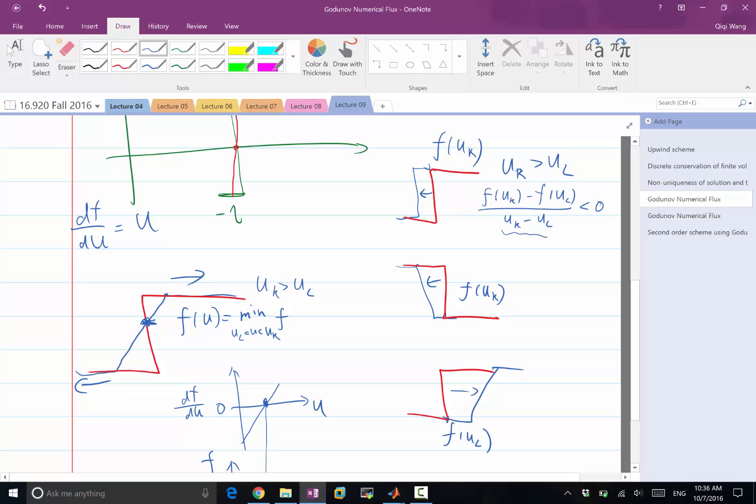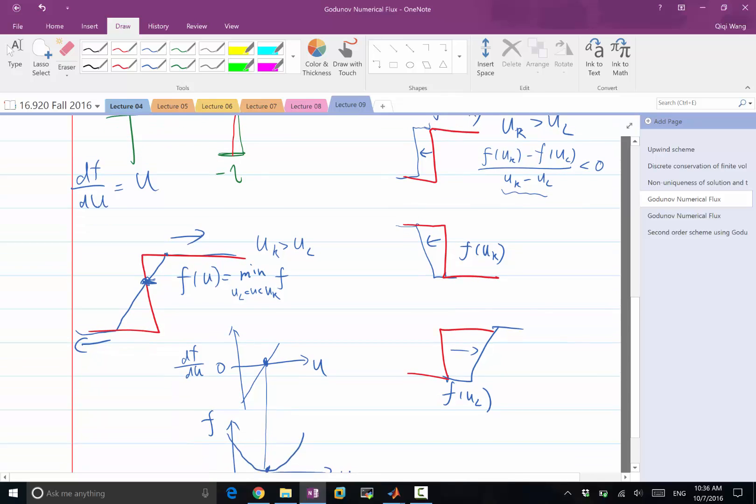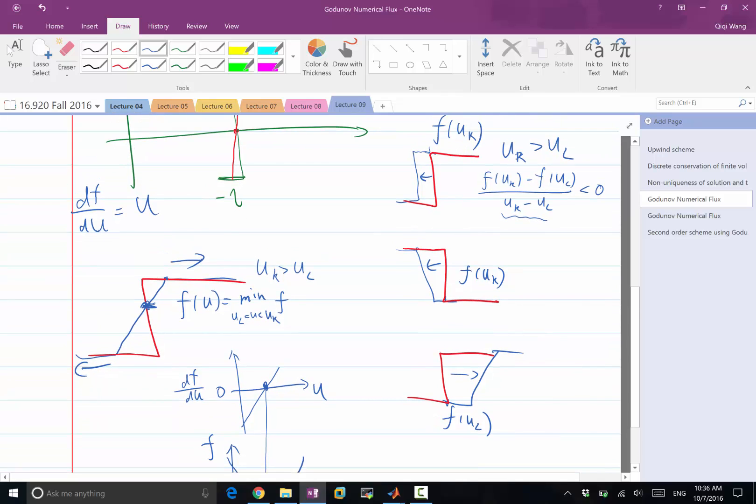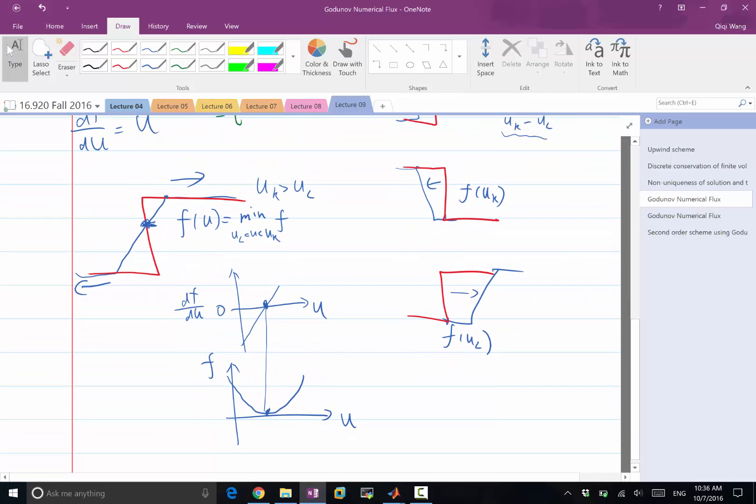So taking the minimum over that range, what would I get? I would get ur, right? So whenever ur is greater than ul, I want to take the minimum of the flux over this range. And the other case is the opposite. So when ur is less than ul, I should be taking the maximum over this range.